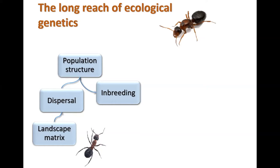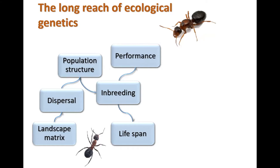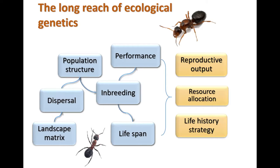When we study ants we have different parties — we have the queens and the workers. This is not a simple solitary organism. Some things that these genetic factors may impact include the lifespan of individuals — how long do they live, and how does inbreeding affect that? How do individuals perform under inbreeding versus outbreeding? This will all sum up into the reproductive output, i.e. the evolutionary fitness of these colonies and the life history strategy, and how they allocate resources to different functions.